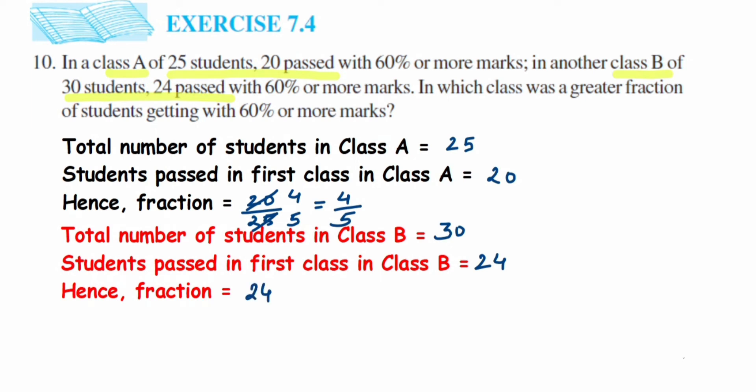We can cancel this in 3's table, that is 3 tens and 3 eights, or you can cancel this in 6's table: 6 fours and 6 fives. The fraction will become 4 upon 5.